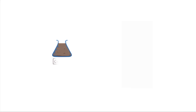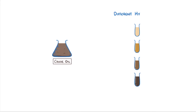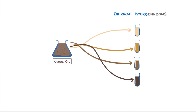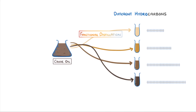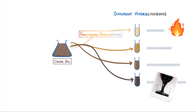We saw in the last video that we can think of crude oil as a mixture of lots of different hydrocarbons, and that we can separate out these different hydrocarbons by the length of their carbon chains using a process called fractional distillation. We also saw that the shortest hydrocarbons are the most flammable, and so they make the best fuels, whereas the longer chain hydrocarbons are thick, viscous liquids, which makes them comparatively less useful.